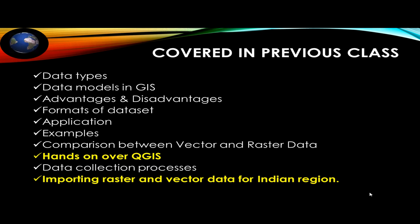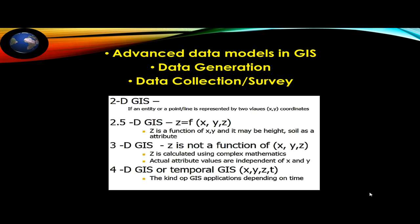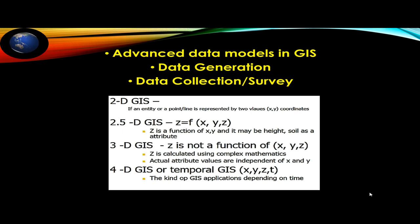Today's topic is advanced data models in GIS, data generation, data collection and survey. Primary data are datasets collected by a surveyor going directly to the place — more reliable because we have the data in hand. Secondary data includes remote sensing data or data taken from department database management systems — sometimes reliable, sometimes not.